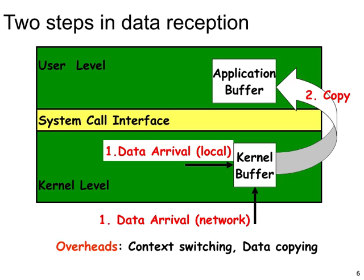Before we get into the details of the IO models, let's first look at the various steps involved in IO operations. We have data arriving into a kernel buffer — either over the network, from an IO device, or locally from another process. Once the data arrives into the kernel buffer, it is copied into the user level application process. This second step is often called the copy-to-user operation, where data is copied from a kernel buffer to user space. We distinguish different IO models based on these two stages: data arrival into the kernel buffer, and copying data into user space.